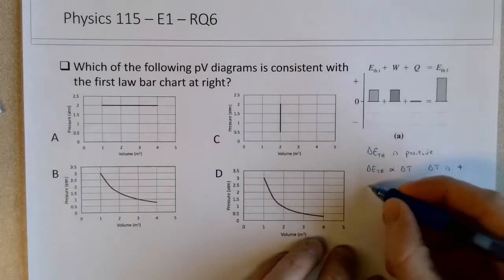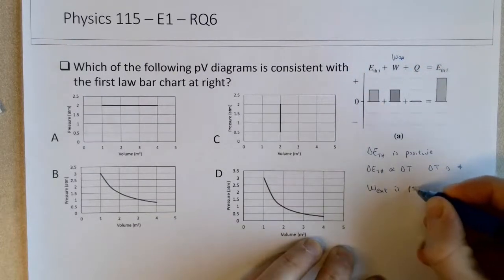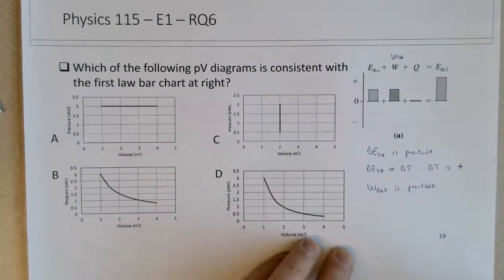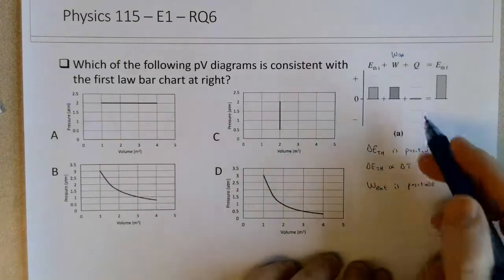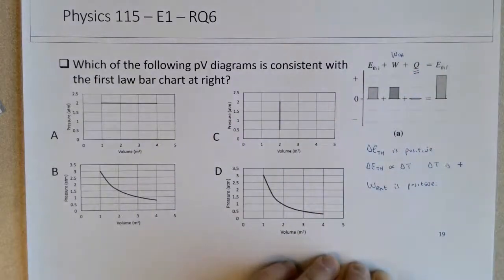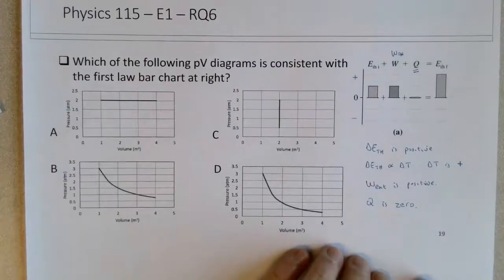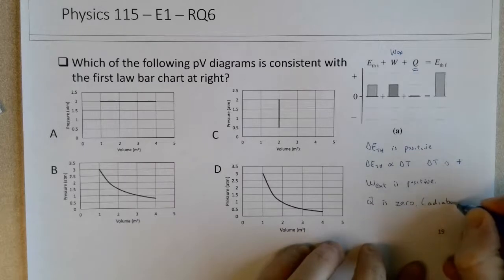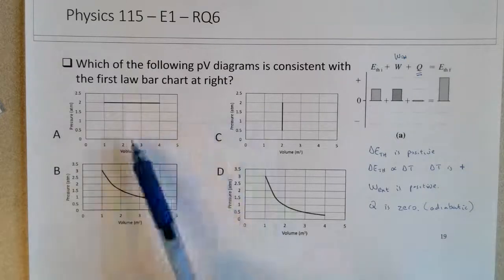So what else can we determine? We know that the work is also positive. Work external is positive, which means we've got to think about the area underneath the curve carefully. If the work external is positive, it has to be a compression. The graphs don't show that, but I'll explain that in a second.